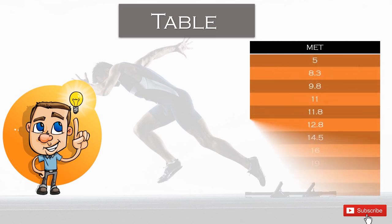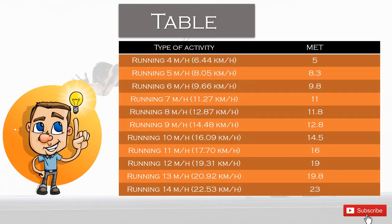For each speed I put a MET equivalency next to it. As you can see, if you run 4 miles per hour or 6.44 kilometers per hour, your MET equivalency is going to be 5. You can see MET equivalencies for running speeds from 4 to 14 miles per hour, or from 6.5 to 22.5 kilometers per hour. Depending on your pace, it will be really easy to calculate how many calories you will burn while you run for a certain period of time.